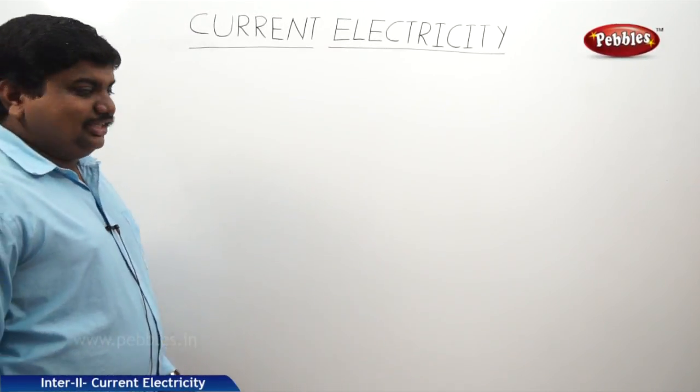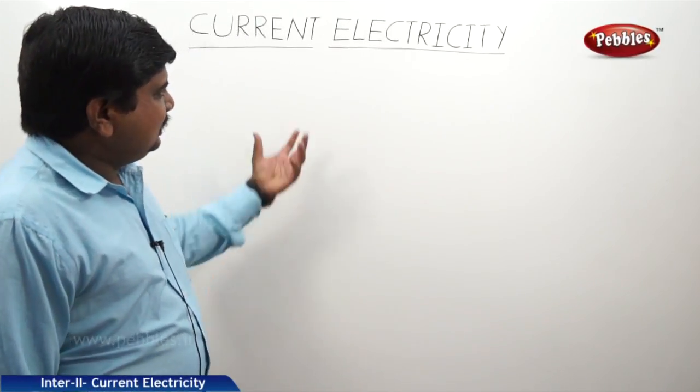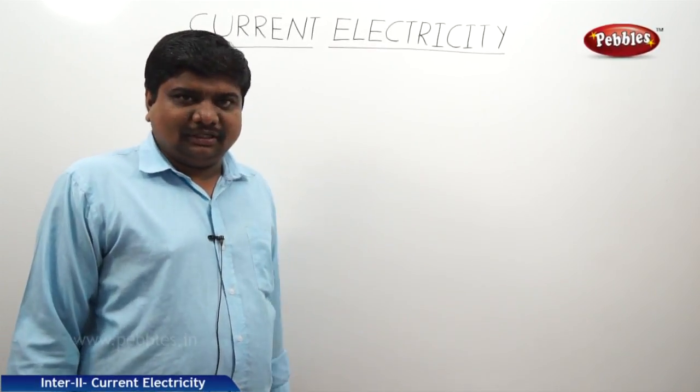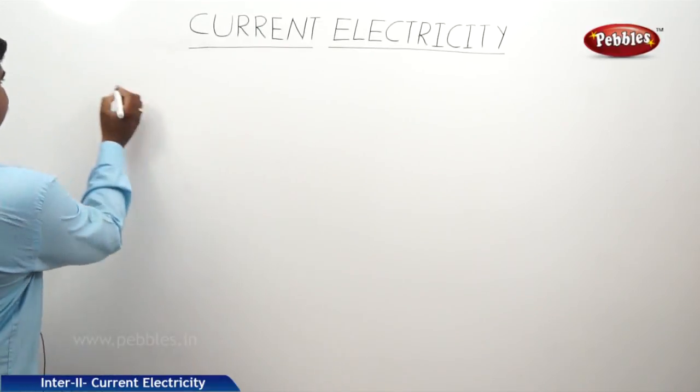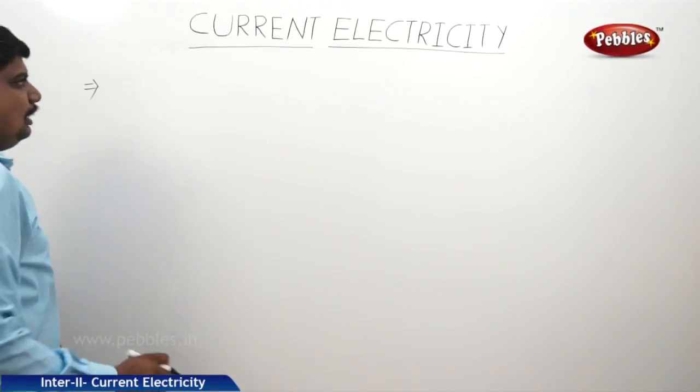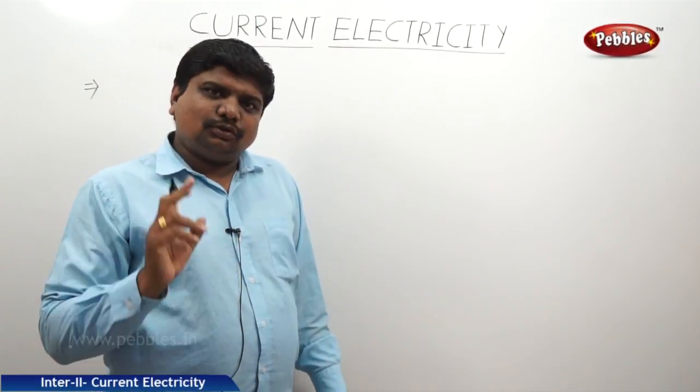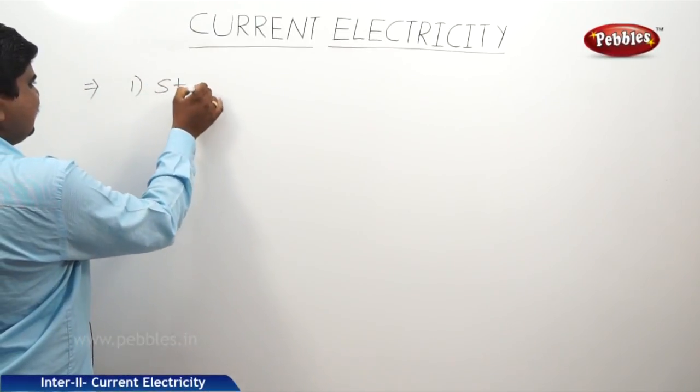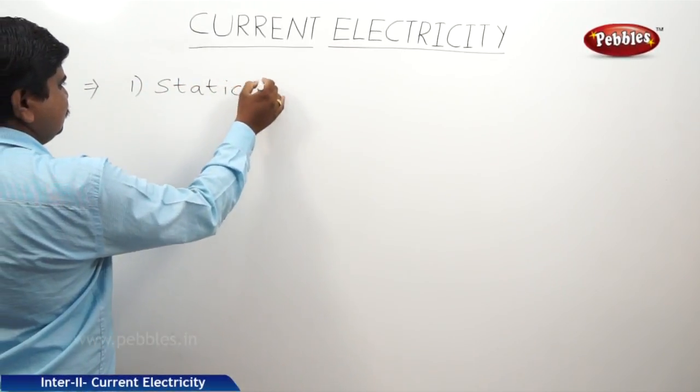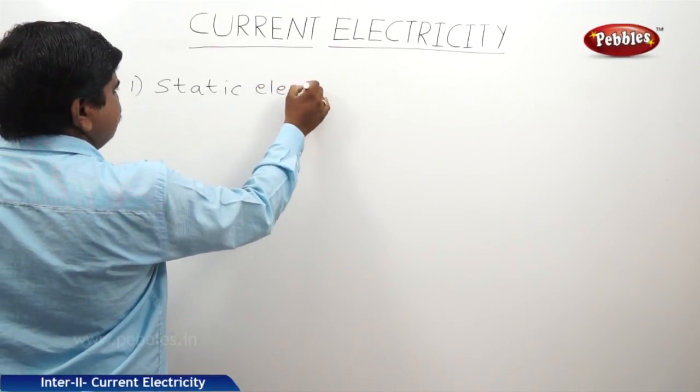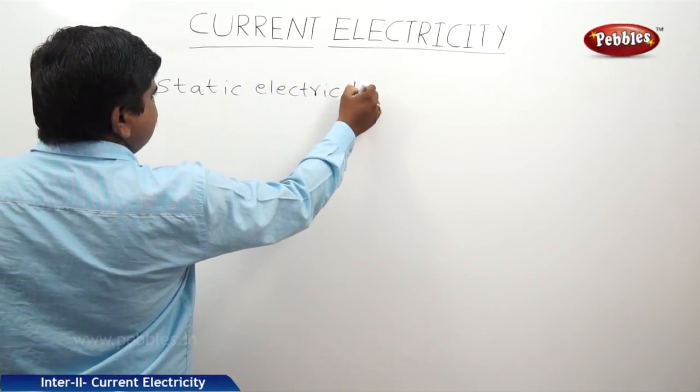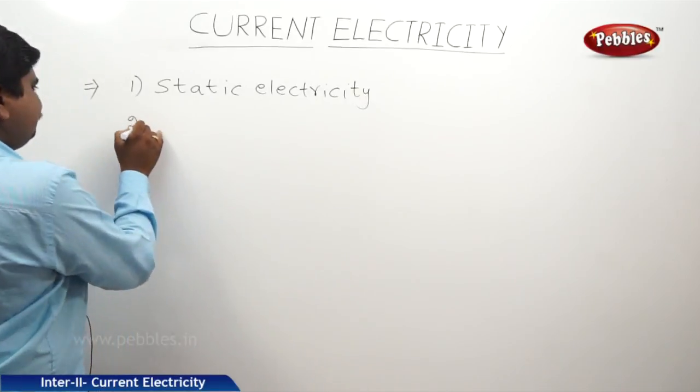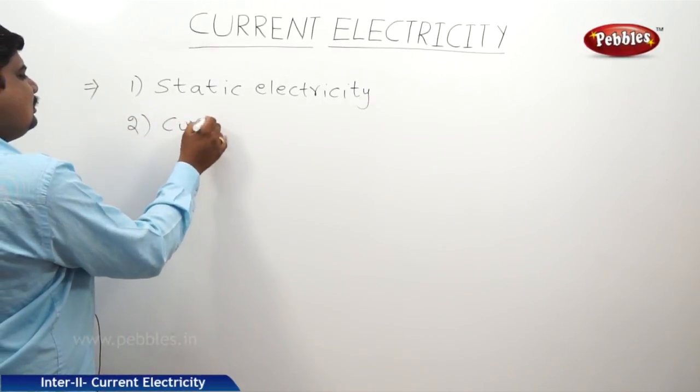Now, we are discussing a chapter. Its name is Current Electricity. So, electricity is two types. One is Static Electricity. Second one is Current Electricity.